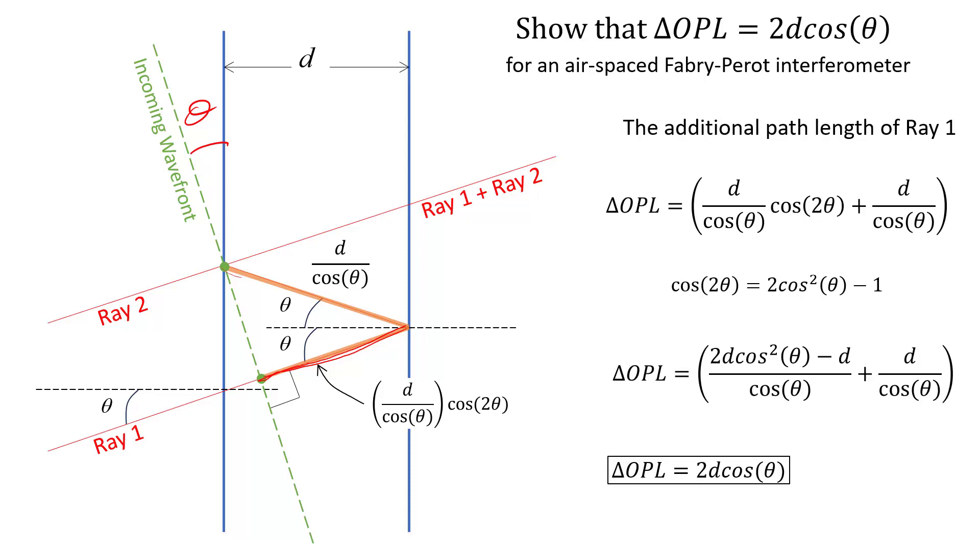After all, this segment right here is d over cos theta. That blows up at theta equals 90 degrees. True, but theta can never be bigger than 45 degrees.